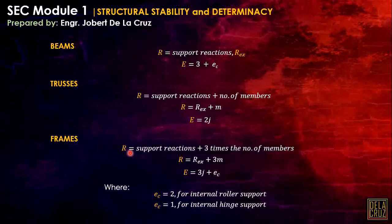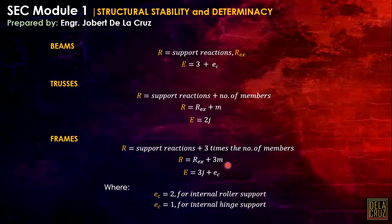For frames, which is the more general application, R equals R sub EX plus 3M. We add 3 times the number of members because at every member, if we cut it, we expose 3 internal forces: shear, axial force, and moment. The equilibrium equation is 3J plus E sub C, where E sub C equals 2 for an internal roller support and 1 for an internal hinge support.